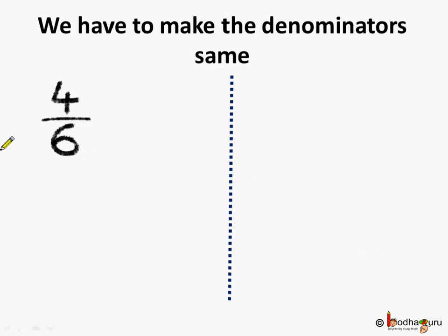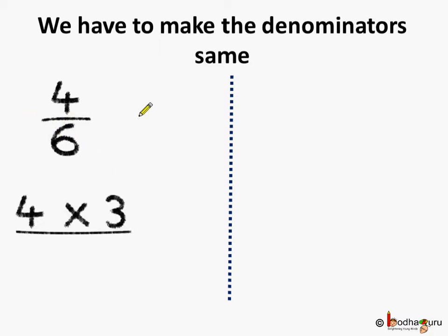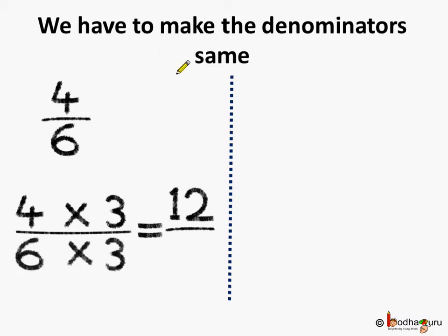Let's convert the fractions to their equivalent fractions with denominator 18. We have 4 by 6. To make the denominator 18, we multiply 6 by 3, and we also multiply the numerator 4 by 3, because both the numerator and denominator must be multiplied by the same number to get an equivalent fraction. So 4 multiplied by 3 is 12, and 6 multiplied by 3 is 18. We get the equivalent fraction 12 by 18.